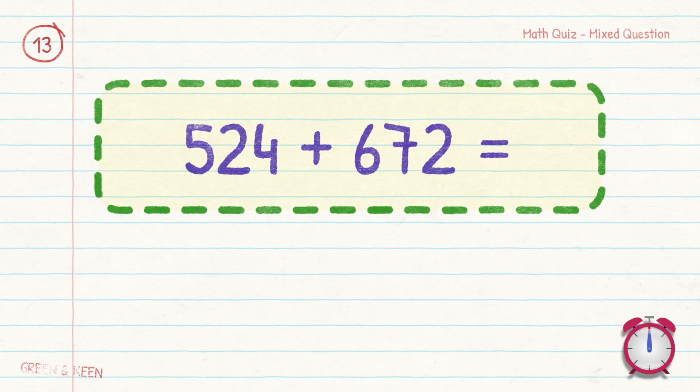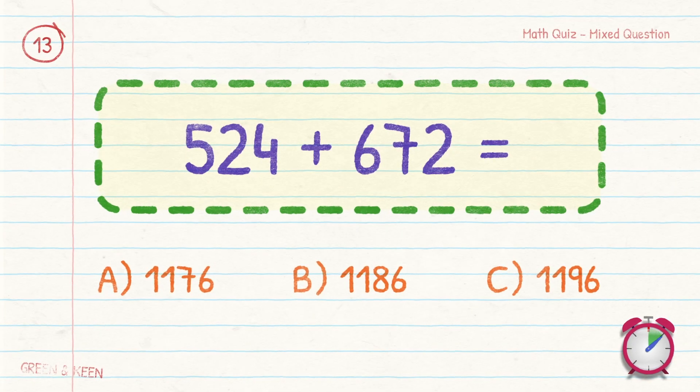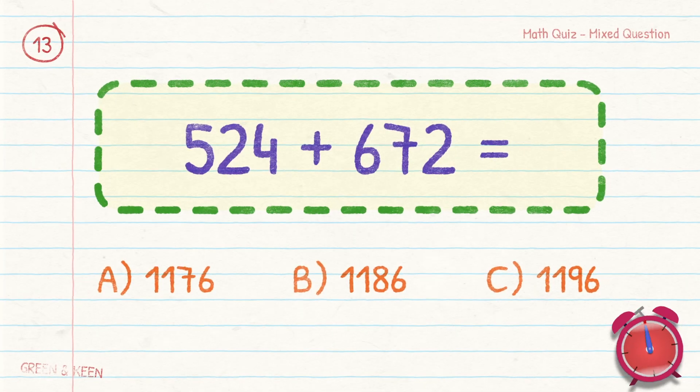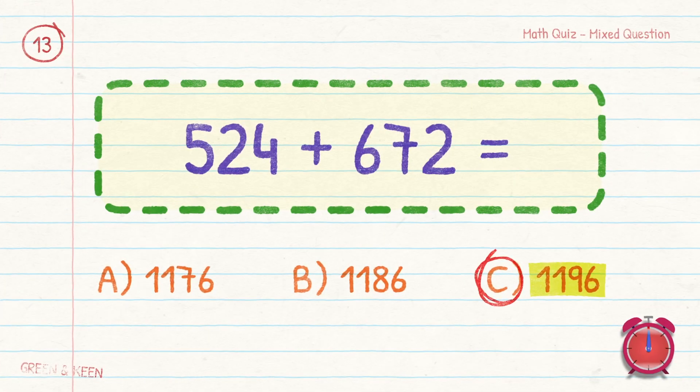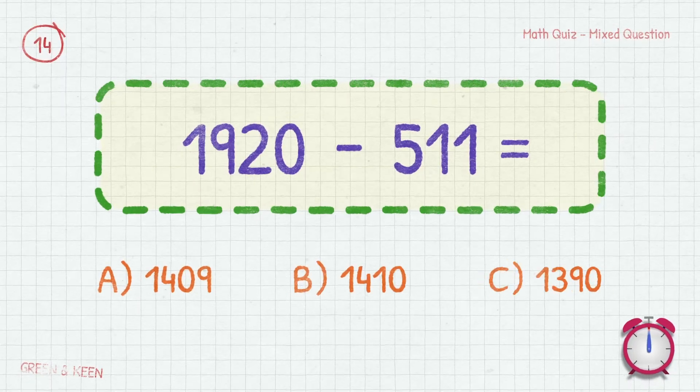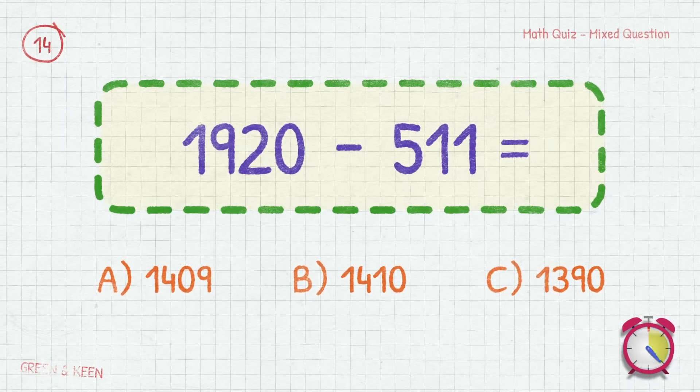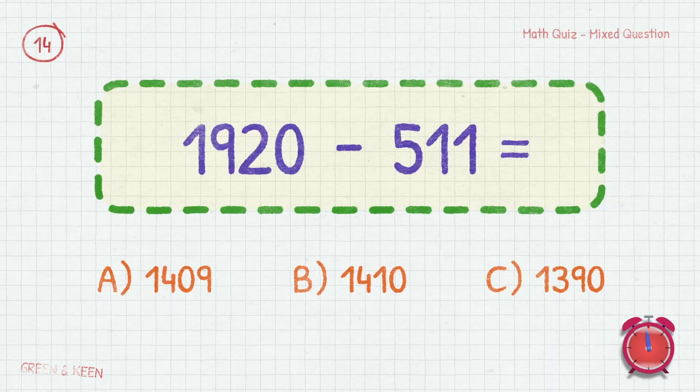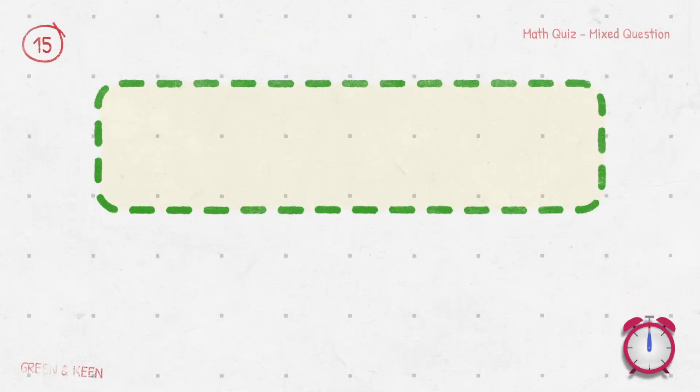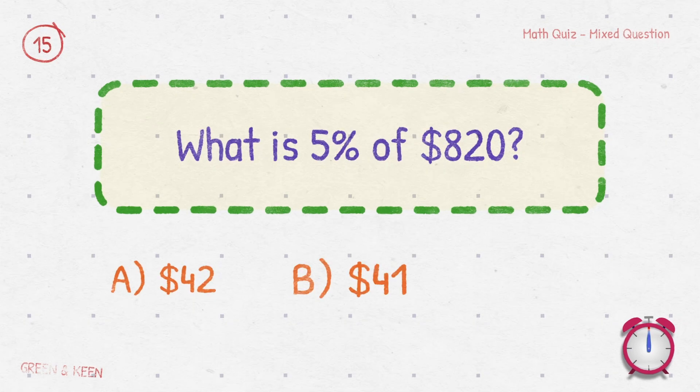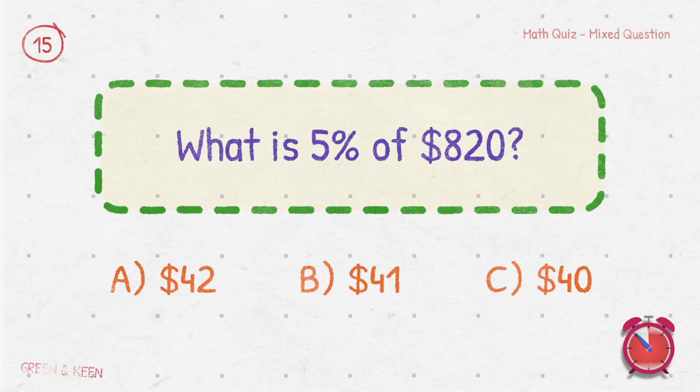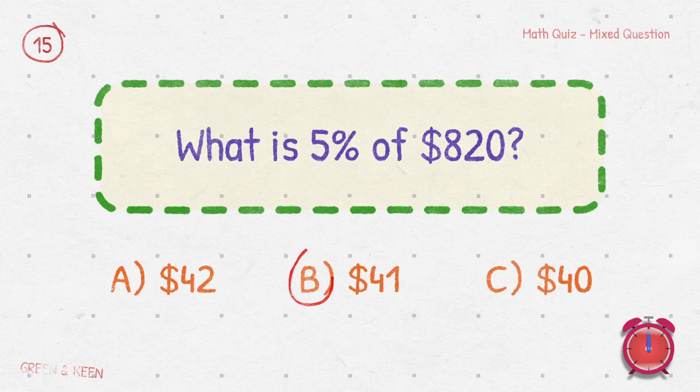524 plus 672 equals? 1196. 19.20 minus 5.11 equals? It's 14.09. What is 5% of $820? $41.